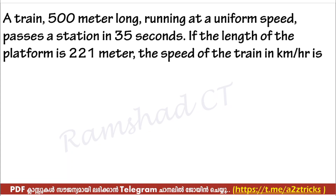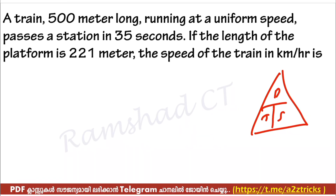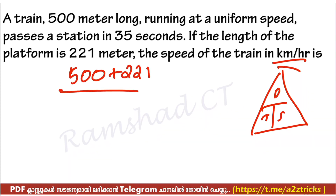Next question: a train 500 meters long running at uniform speed passes a station in 35 seconds. If the length of the platform is 21 meters, find the speed of the train in km per hour. The total distance equals 500 plus 21. Speed equals distance divided by time — that is, total distance divided by 35 seconds.